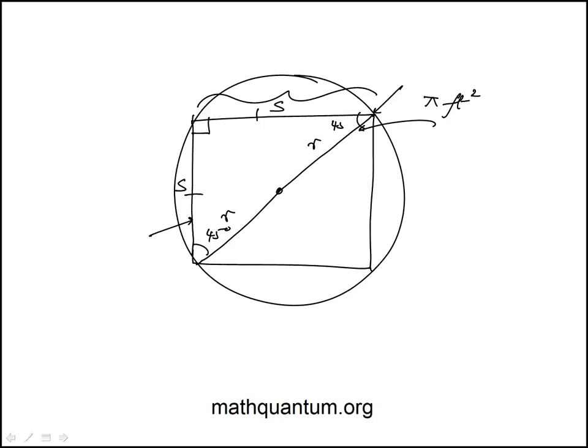So the diameter here is going to be s root 2. So s root 2 is equal to 2r, or s is 2r over root 2.